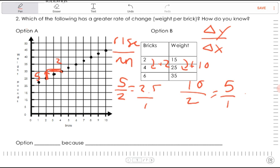Well now we can compare them. Which one has a greater weight per brick? 2.5 or 5? Well, 5 is greater so our answer is option B because 5 pounds is greater than 2.5. Or the rate of change is greater because we know that 5 is bigger than 2.5. All right, thanks for watching. See you in the next video.